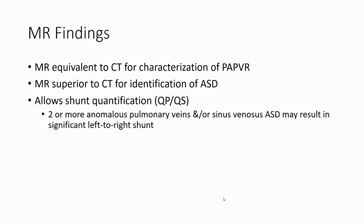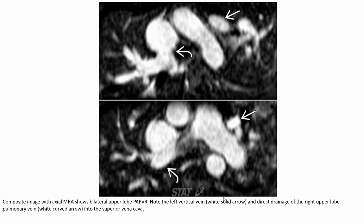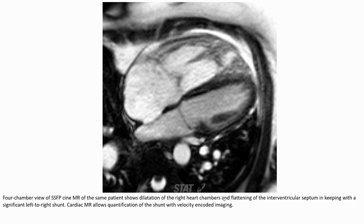Composite image with axial pump of bilateral PAPVR shows vertical vein and direct drainage of PAPVR pulmonary vein into superior vena cava. Four-chamber echocardiographic view shows dilation of the right heart chambers and flattening of the interventricular septum, consistent with significant left-to-right shunt. Echo allows quantification of shunt with velocity and flow imaging.